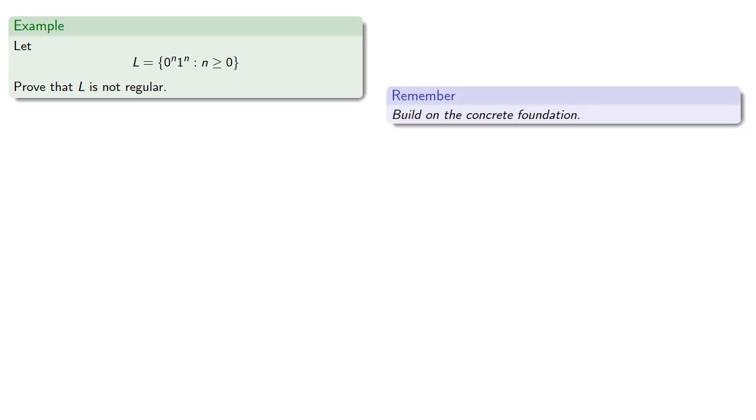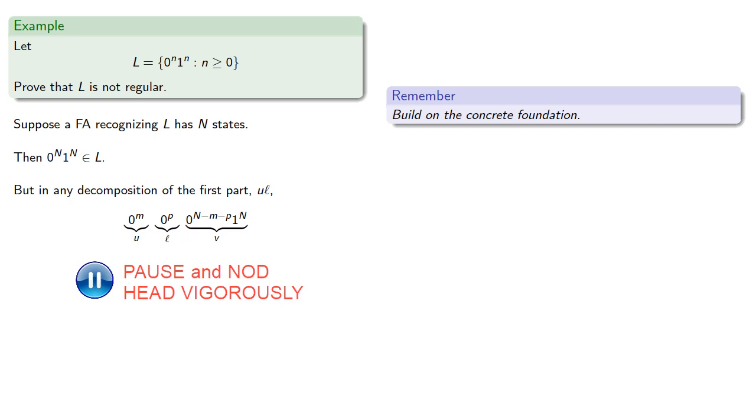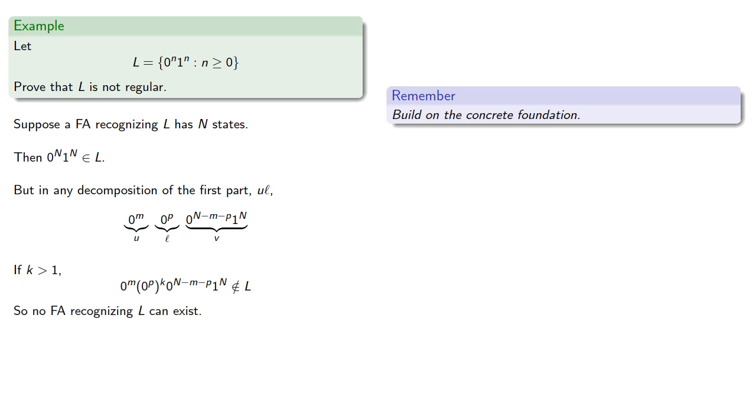Suppose we have a finite automaton recognizing L with n states. Then by a very similar argument, 0^n 1^n is a string in L, but in any decomposition of the first part, the l is going to be some string of zeros. And for any k greater than or equal to 1, repeating the middle doesn't produce something in L, so no finite automaton recognizing L can exist, and consequently L is not regular.